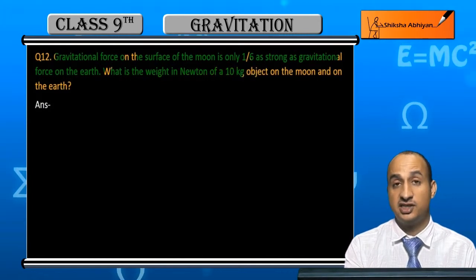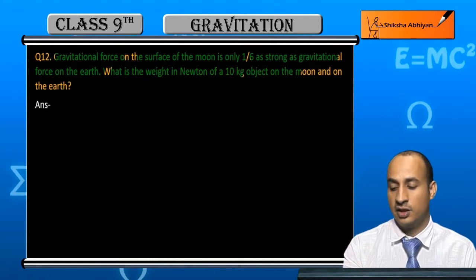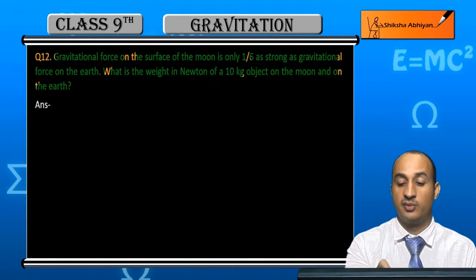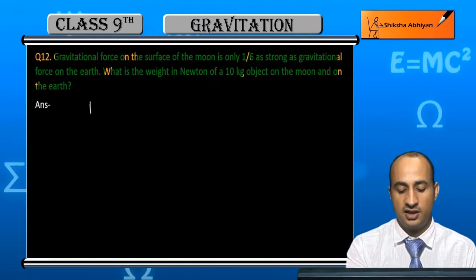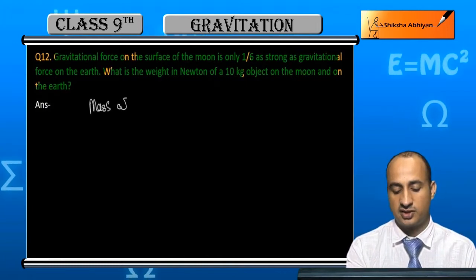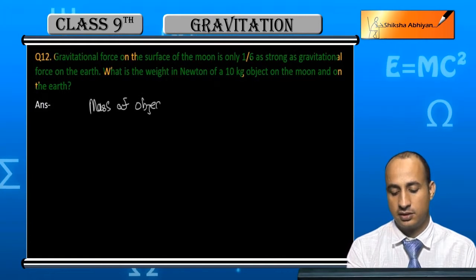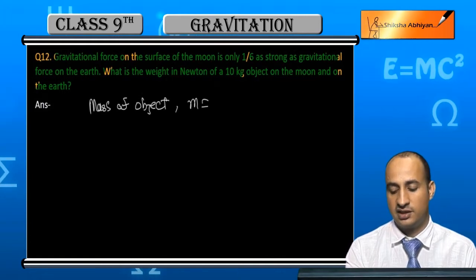What is the weight on the moon and on earth? So the mass of object is m is equal to 10 kg, given.